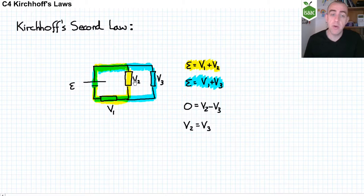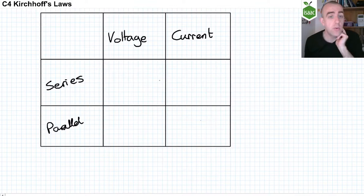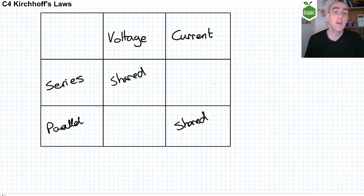We can summarize the consequences of those two Kirchhoff's laws in a table like this, where the voltage across two components in series is shared, but the current through two components in parallel is shared. The voltage across two components in parallel is the same, but the current through two components in series is the same. And you get a table that looks like this.